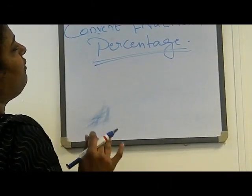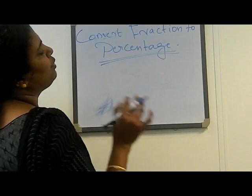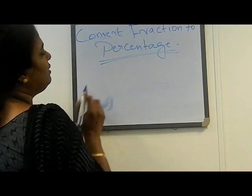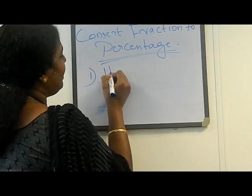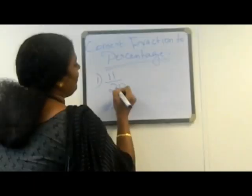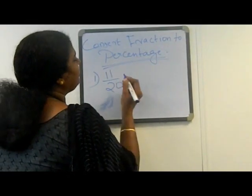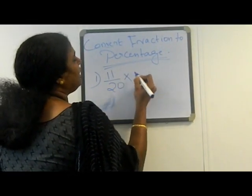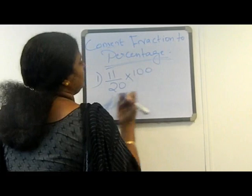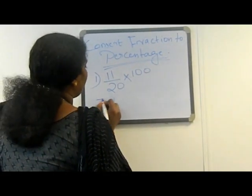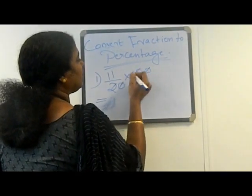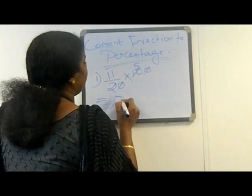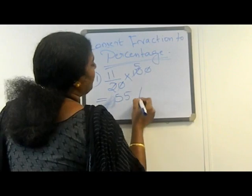Here we are discussing conversion of fraction to percentage, and we will discuss some examples. Example: 11 divided by 20 — converting to percentage. We multiply by 100, then convert to lowest form. That means 55% is the answer.